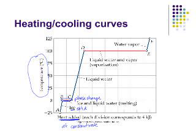Then we have liquid water between C and D. At point D, which is at 100°C — the boiling point of water at one atmosphere — vaporization occurs, another phase change, and it also occurs without a temperature change. The segment D to E is a much larger segment than B to C because the heat of vaporization of water is quite a bit bigger. Once all the water has been vaporized and all those intermolecular attractions broken, we have water vapor and can increase the temperature again.